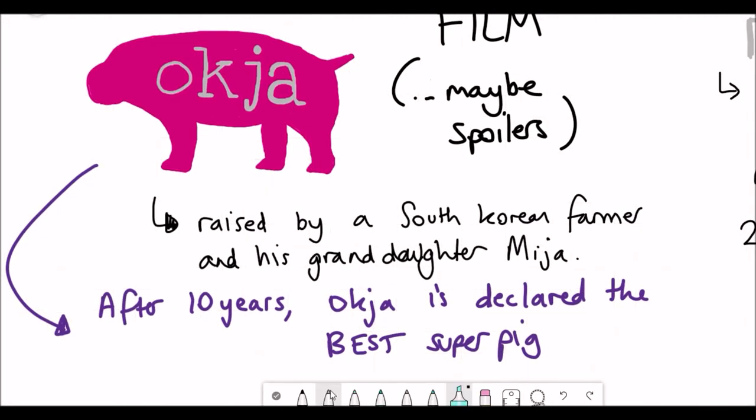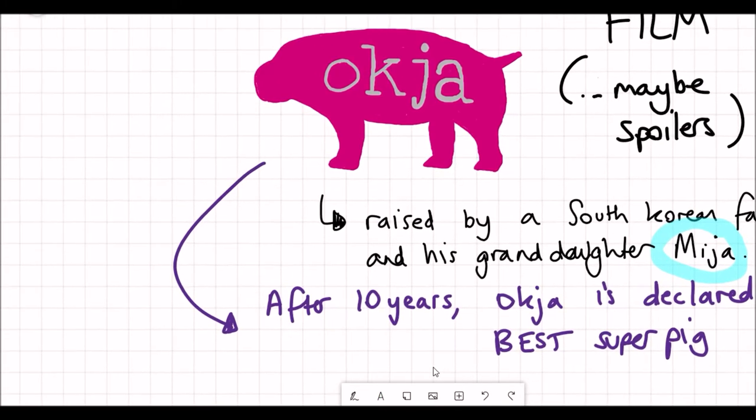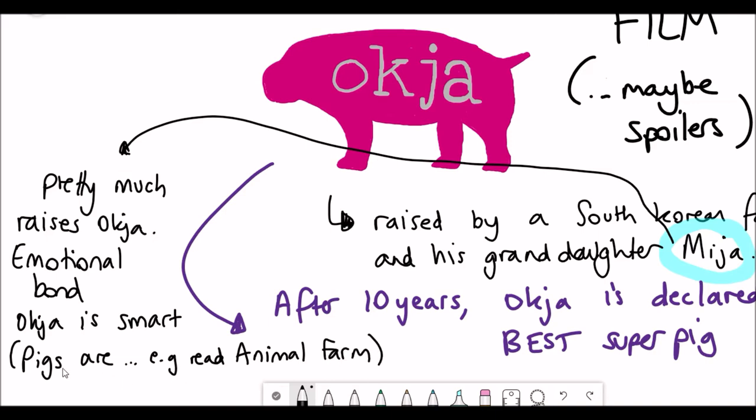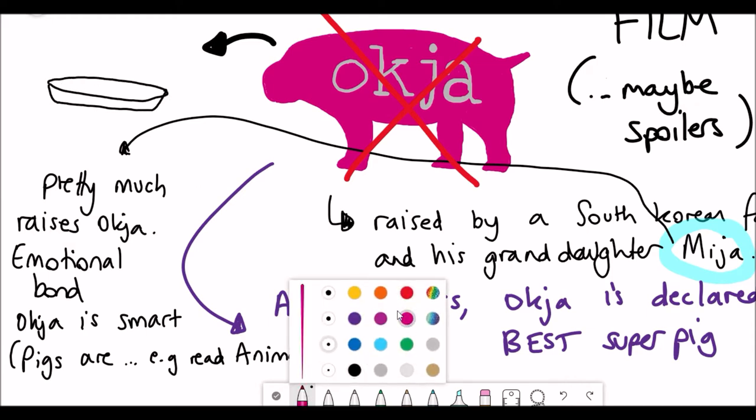The film takes you back to Mija, who's been raising Okja her entire life. As you'll learn through the film, Okja is pretty much raised by Mija and they have this emotional connection between them. Okja's smart, like you see Okja save Mija from falling off a cliff. The point is, inevitably the fate of Okja is to end up on someone's dinner plate, along with some vegetables maybe.